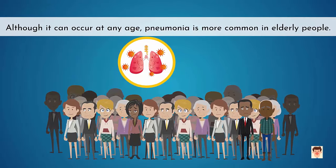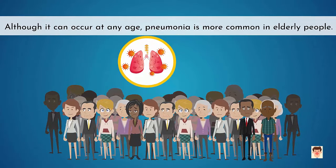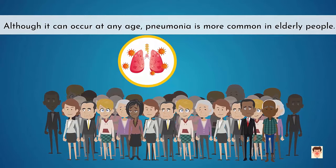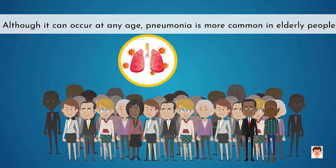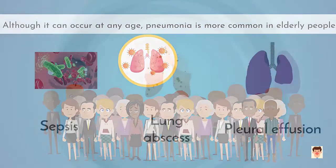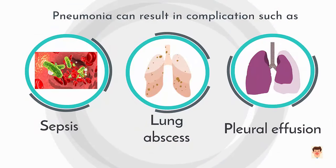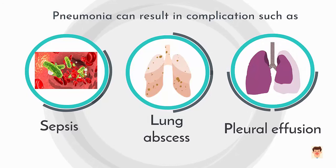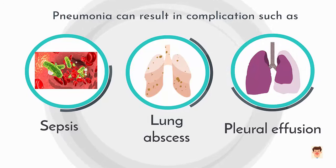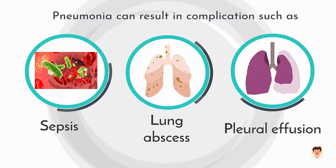Although it can occur at any age, pneumonia is more common in elderly people. Pneumonia can result in complications such as sepsis, lung abscess, and pleural effusion — fluid accumulation around the lungs.